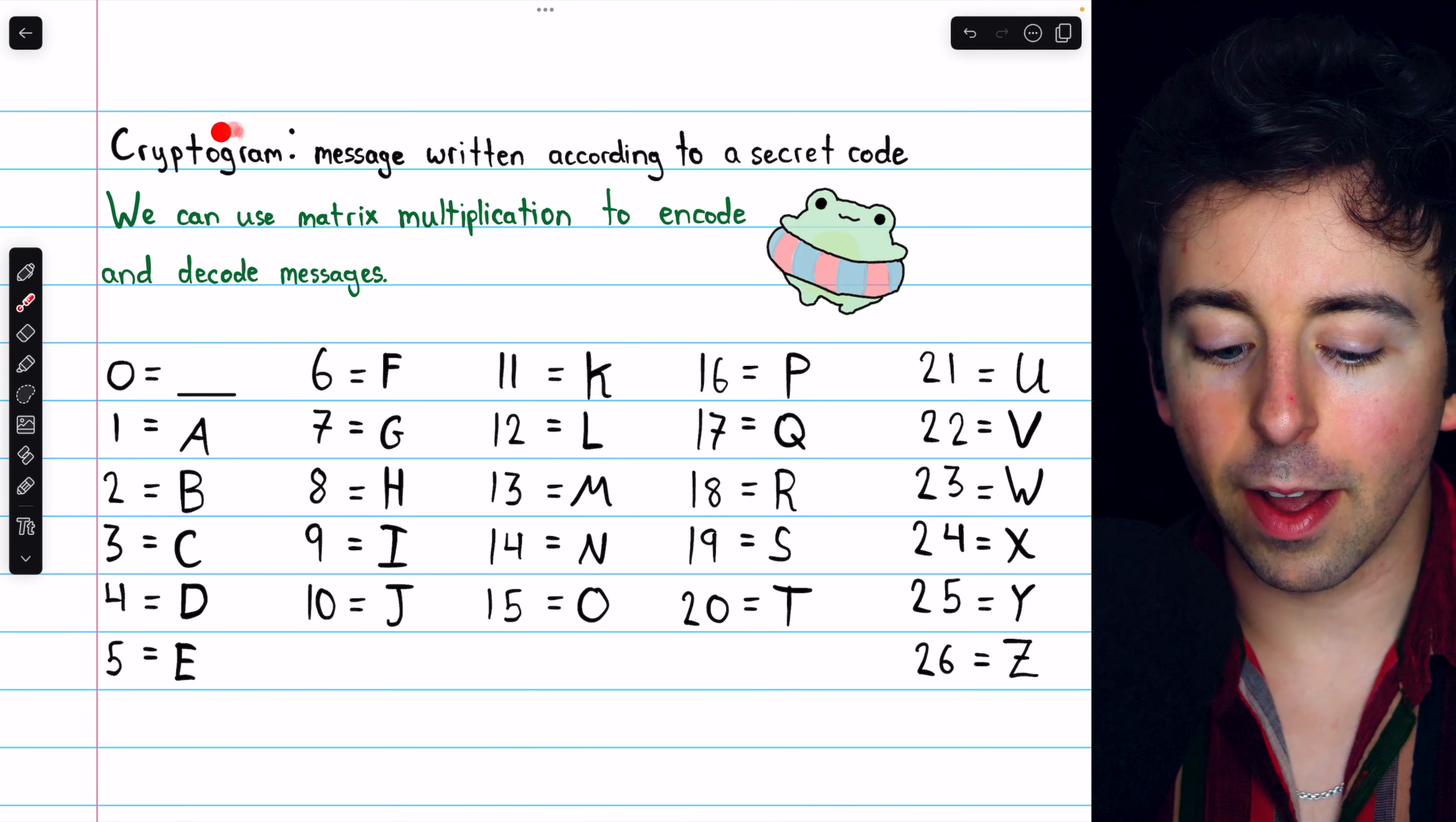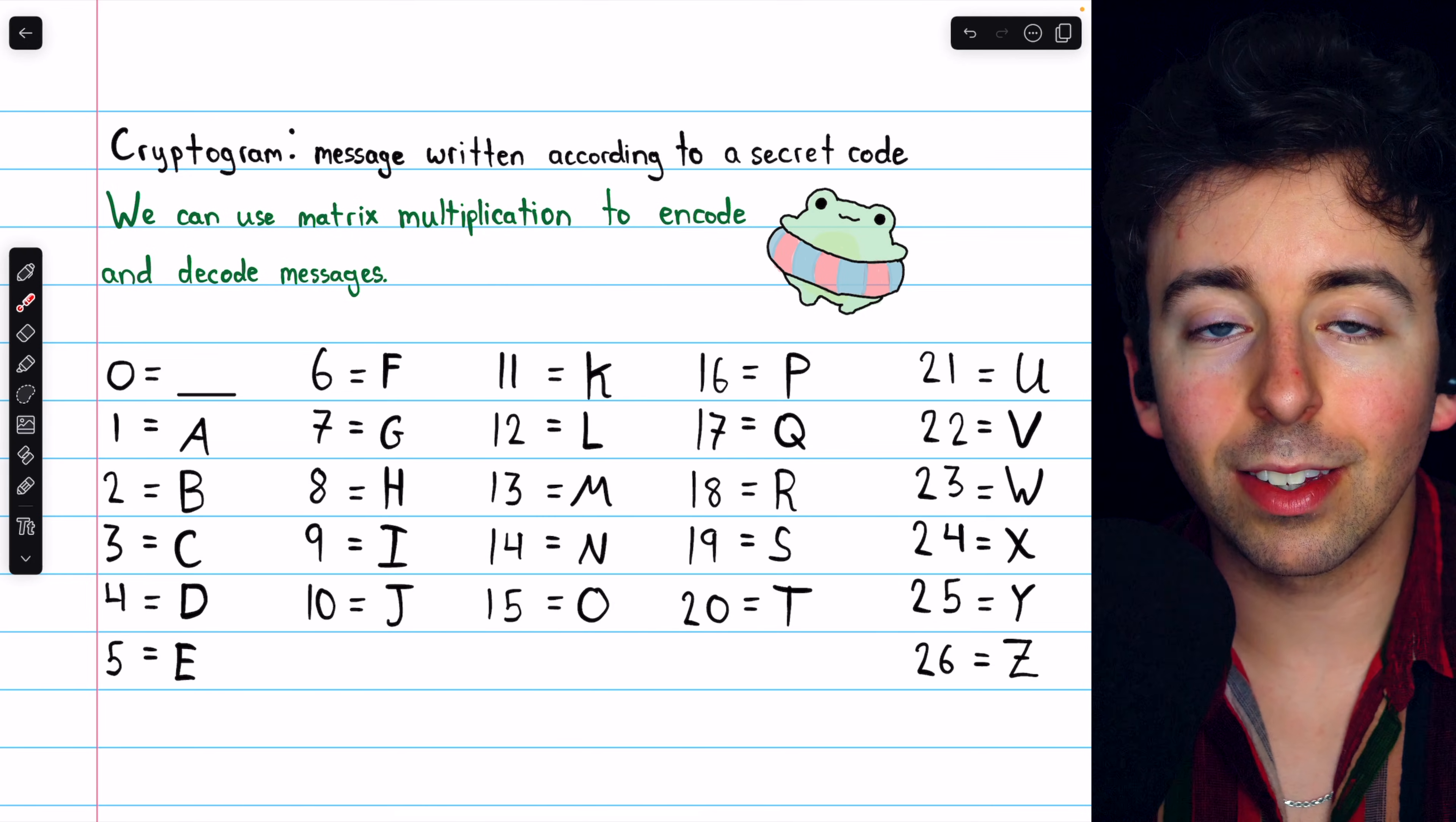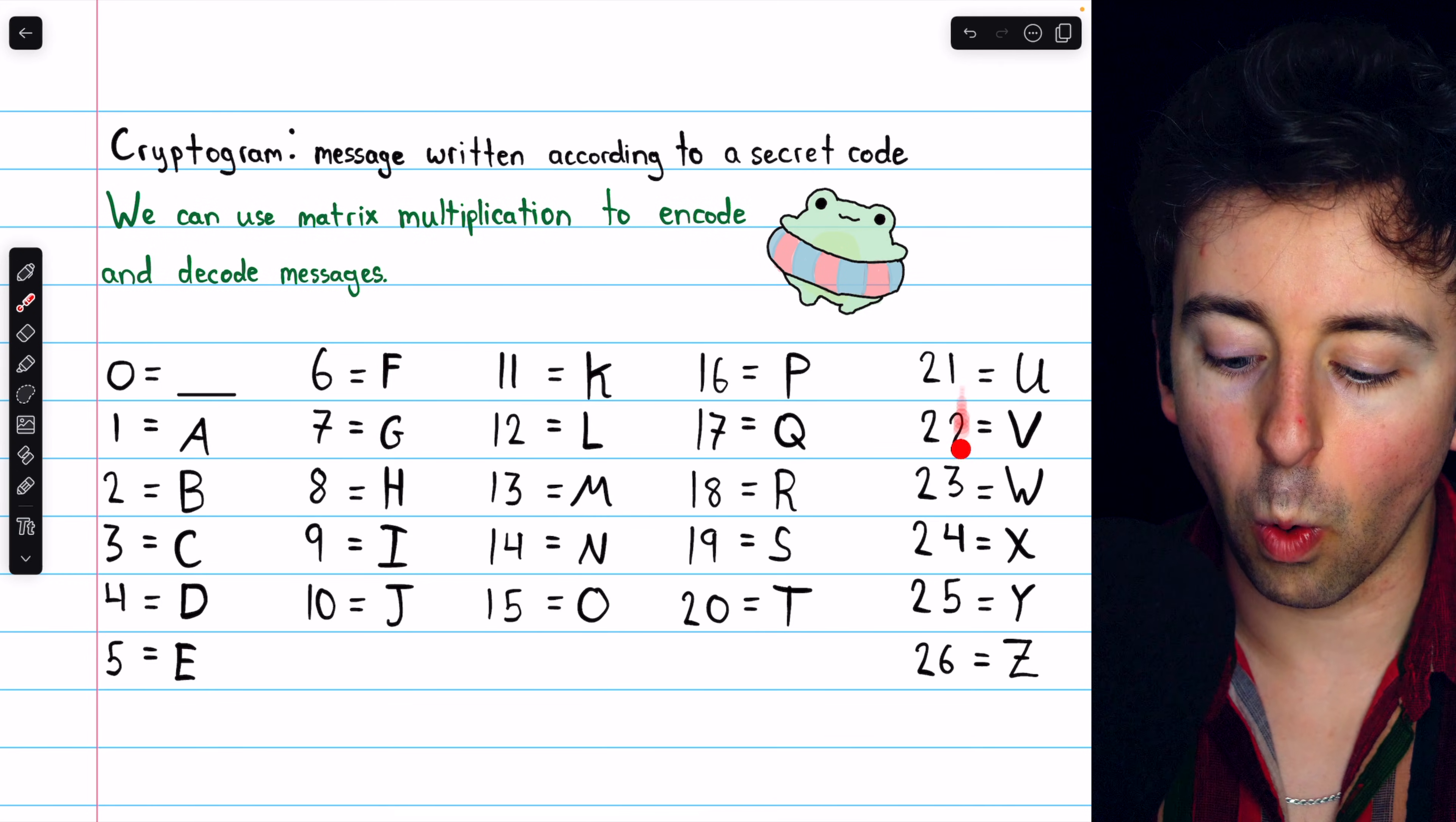So a cryptogram is a message that's written according to a secret code, and in this video, we'll take a look at how we can use matrix multiplication to encode and decode messages. First, it's necessary that we assign numbers to the letters of the alphabet. We'll let 0 represent a blank space, and then assign numbers to letters in sequential order.